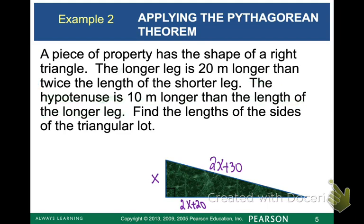Now, in order to solve for x, we're going to use our Pythagorean theorem, since this is a right triangle. So we have a squared plus b squared equals c squared. Let's plug our short leg in for a, our long leg for b, and plug our hypotenuse in for c.